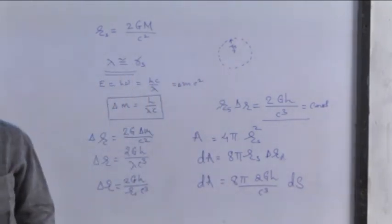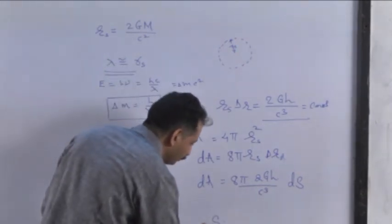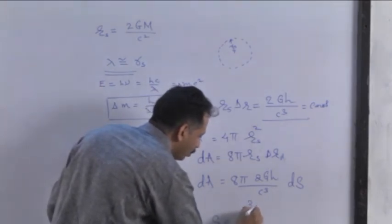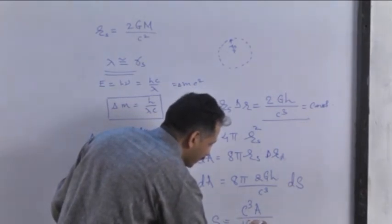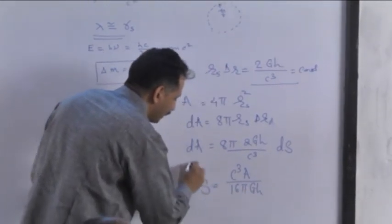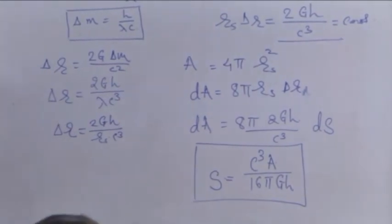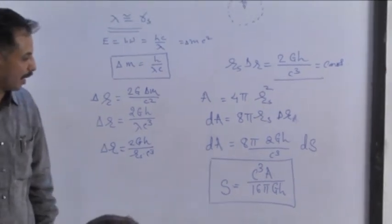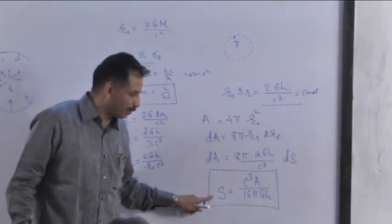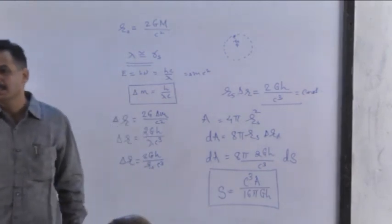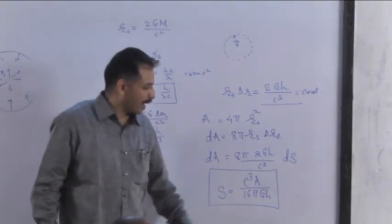So we have S is equal to c³dA divided by 16πGh. This equation is known as the Bekenstein equation, which is an obvious piece of mathematical formula which relates almost major branches of physics. S is entropy from thermodynamics, c is speed of light which is the absolute constant that comes from relativity, and h is Planck's constant.